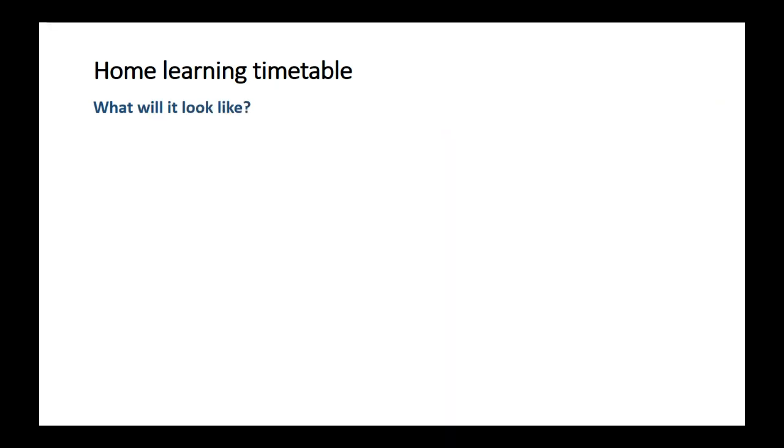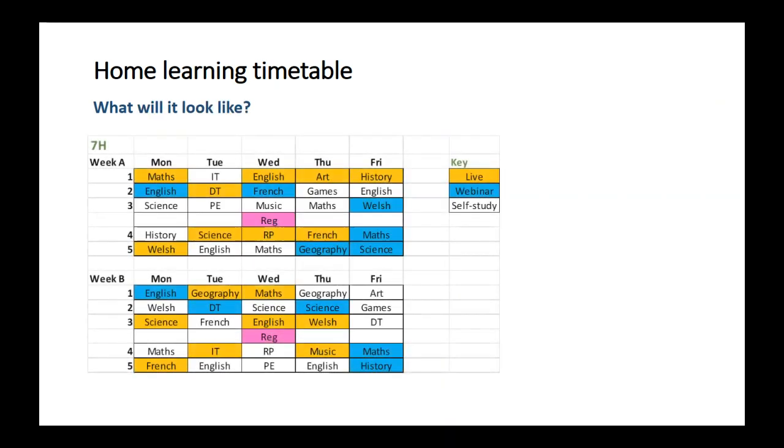So what will your home learning timetable look like? Let's imagine you're in 7H. The timetable, as you can see, is split into live lessons, webinars, and self-study periods. So period one on Monday of week A there's a maths lesson, but this is a live maths lesson, so you would have to join the Google Meet via your Google Classroom.